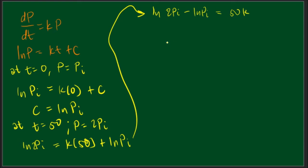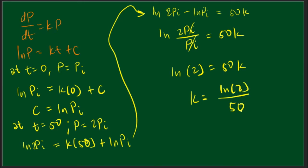Now using your knowledge in logarithm, we could simplify this as ln(2PI/PI) equals 50k. Cancelling our PI here, we end up with ln 2 equals 50k. Then lastly, solving for k, k equals ln 2 over 50.